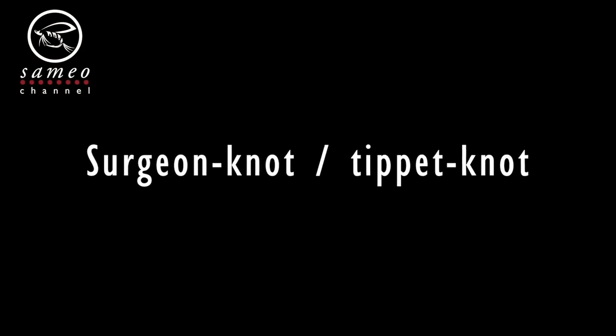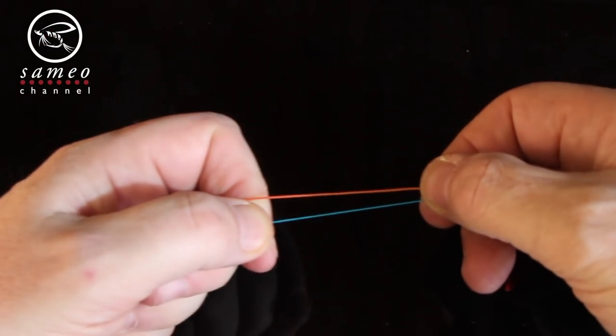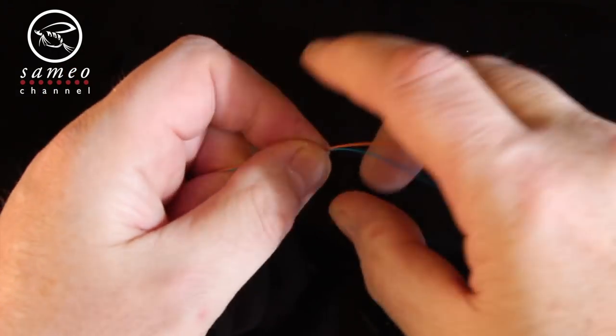And now we do the tippet knot or the surgeon knot. You put the leader and the tippet side by side. Make a loop with both lines.